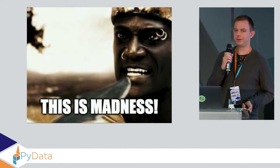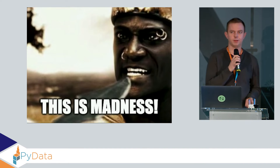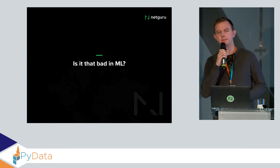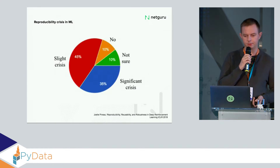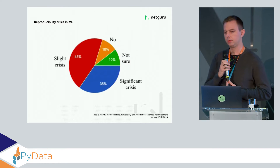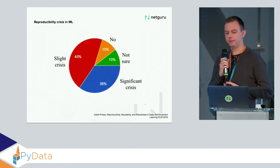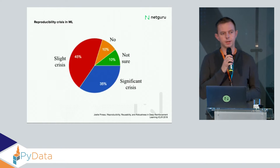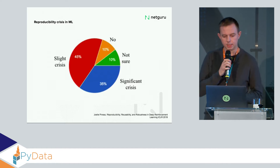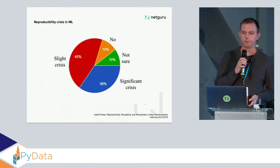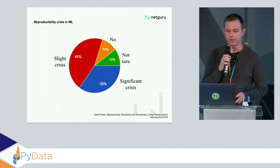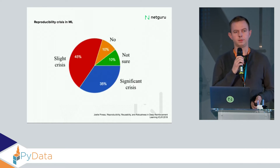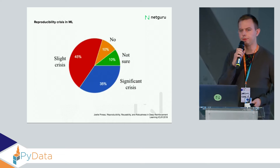I don't have better words to describe the situation — it's basically madness. Is it that bad in machine learning? Julien Pinot, who gave a great talk at ICLR in 2018 about reproducibility in reinforcement learning, conducted a survey among machine learning engineers and researchers. The findings are similar — most machine learning engineers said there is a significant reproducibility crisis in machine learning as well.